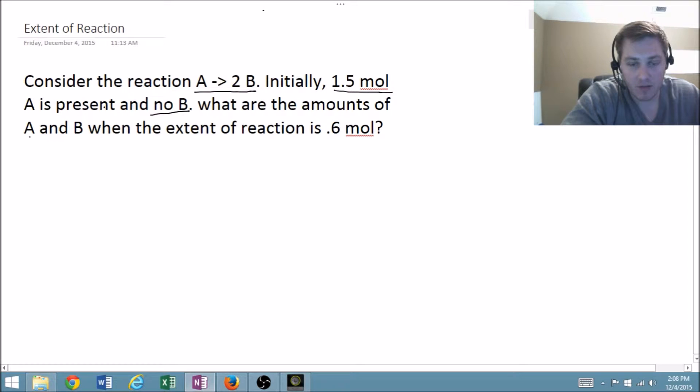We're going to look for the moles of A and B when the extent of reaction is 0.6. If you recall, we have a formula that says the moles of A equals the moles of A initial minus the stoichiometric coefficient times the extent of reaction. I'm going to write out the Greek symbol xi because I'm not very good at doing the symbol, but it looks like a weird squiggly 3.